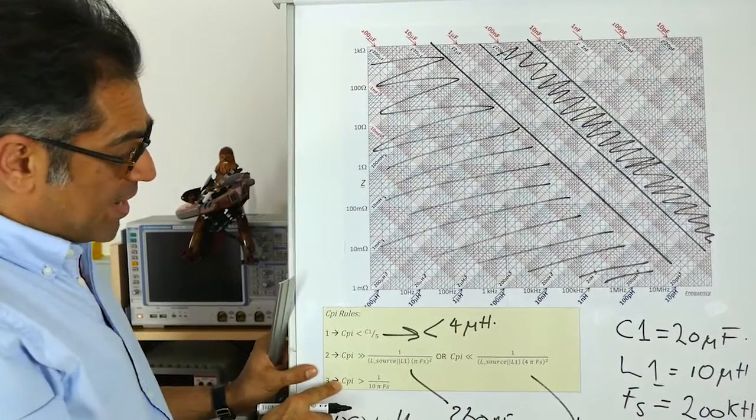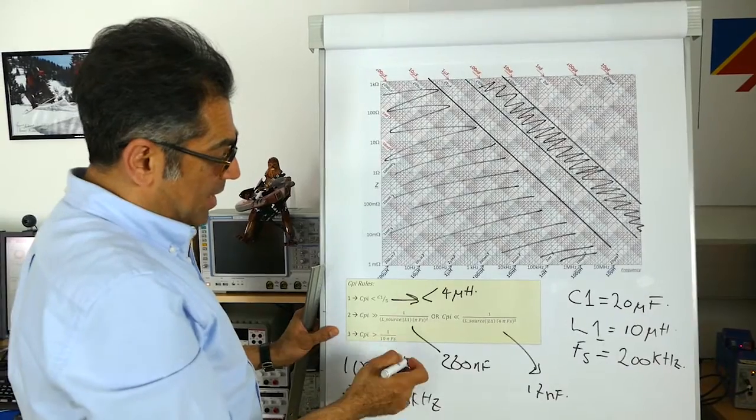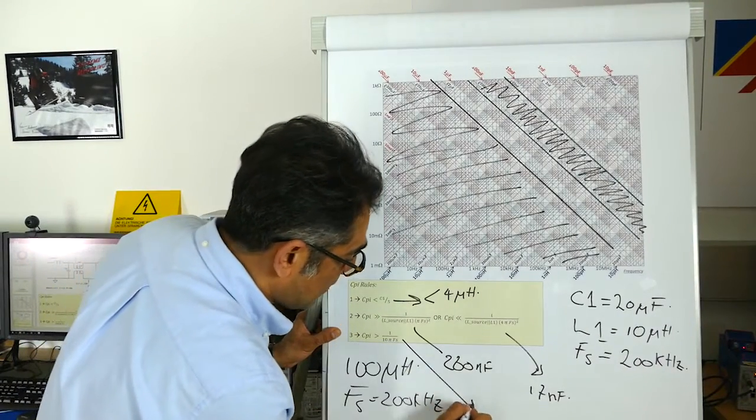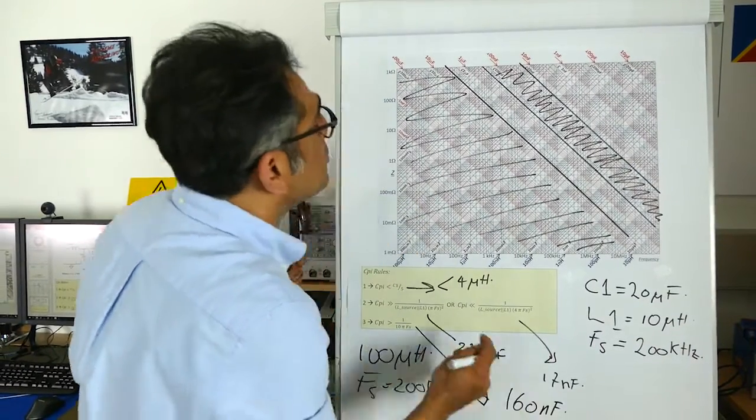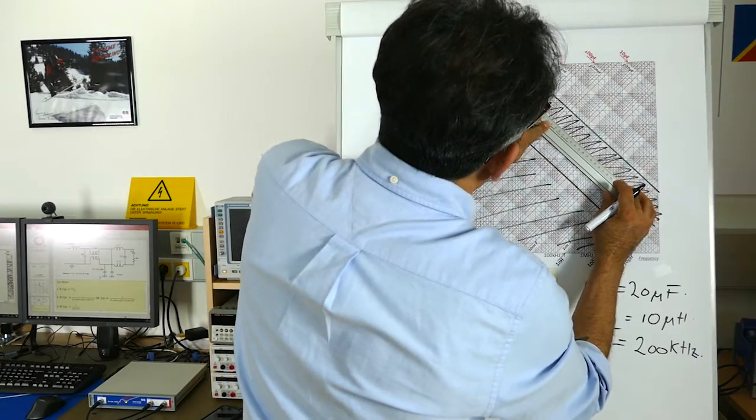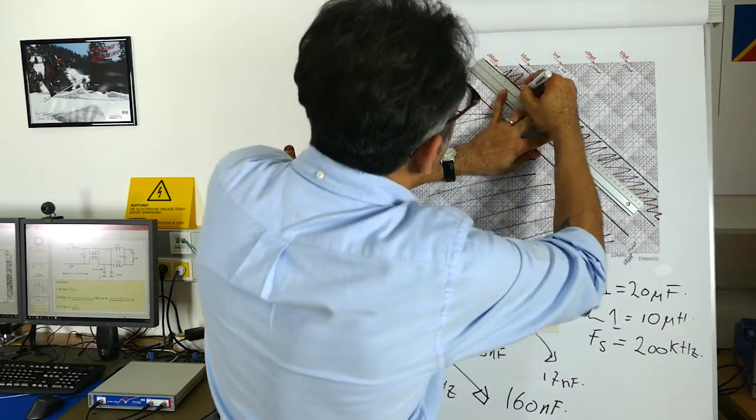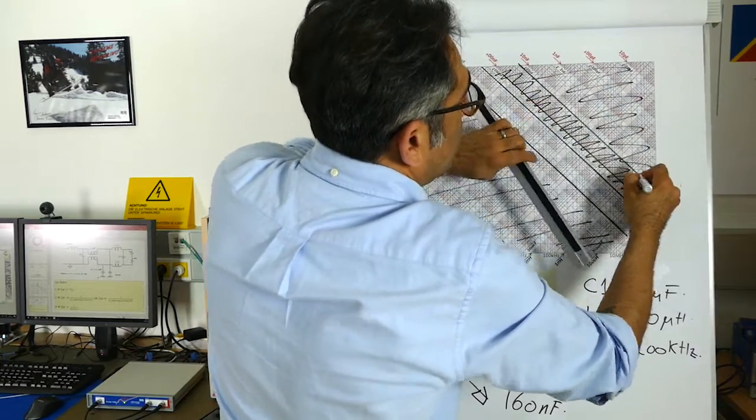Finally, we come to rule three. Cpi has to be bigger than 1 over 10 pi Fs. And that turns out to be 160 nanofarads. So let's find 160. It is around here. It has to be bigger than this.